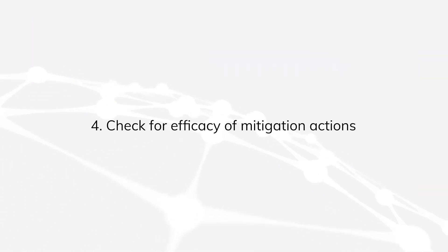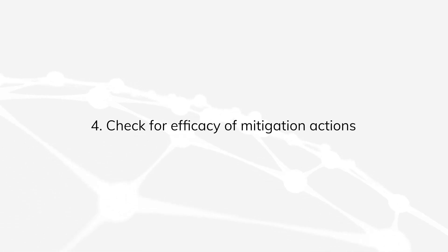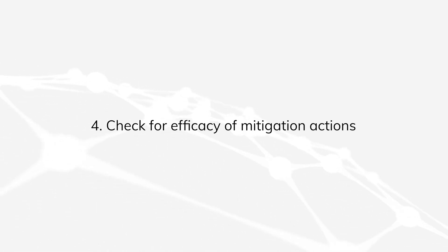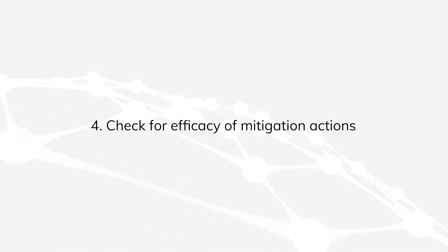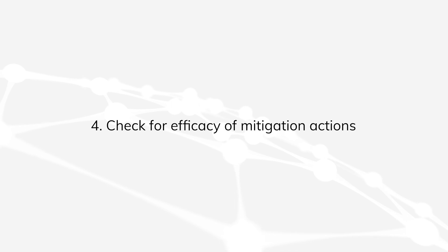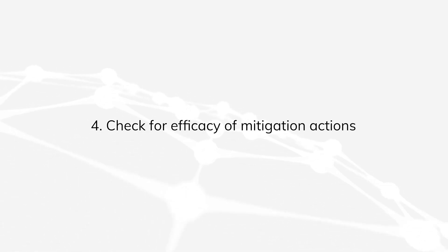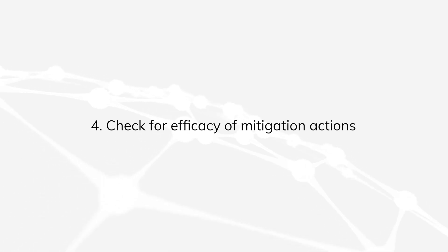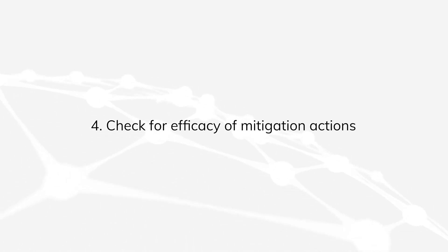Step 4: Once measures are implemented, typically after six months or a year, check for efficacy of your actions. Review your risk assessment on a regular basis and document any occurred problems accordingly. If need be, risks might be revised and/or new mitigation measures defined.